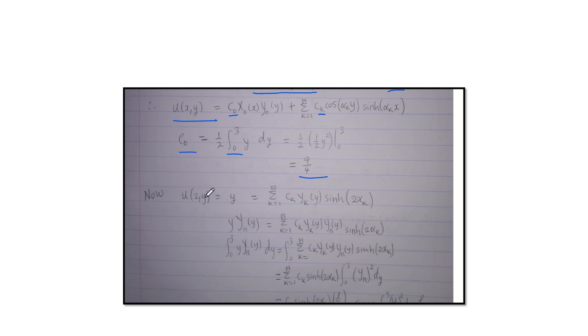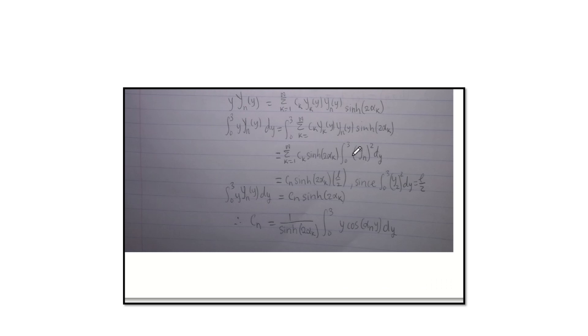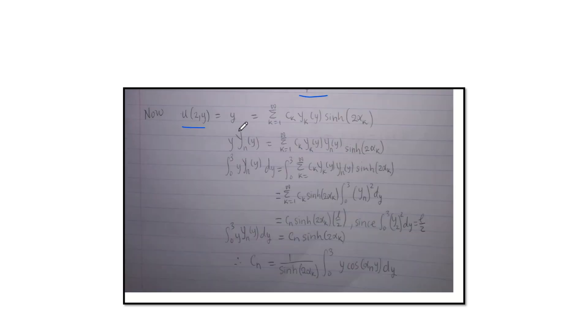Now we're finding our CK. We use the initial condition, which is u of x, y. So you plug it in, you get that. So this is just after here, you multiply by the eigenfunction, which is YN of sine, and then you integrate both sides.